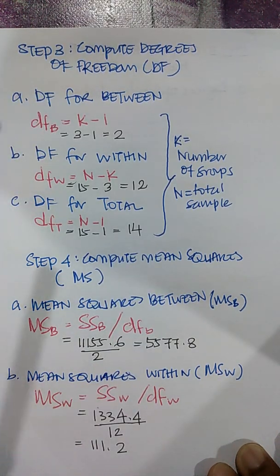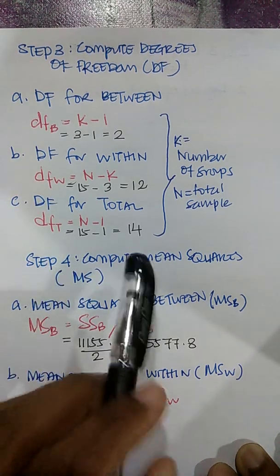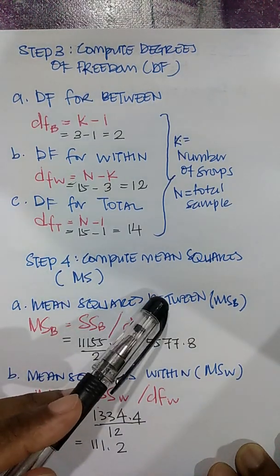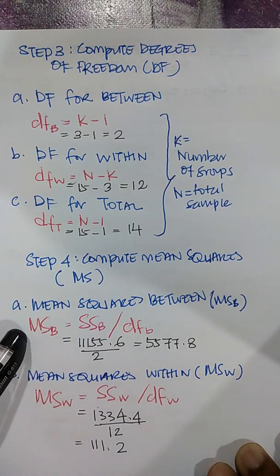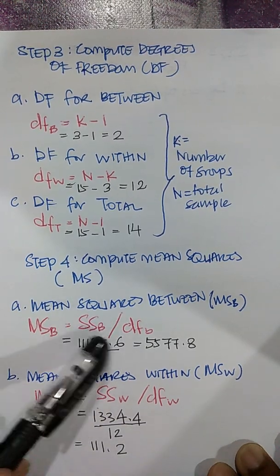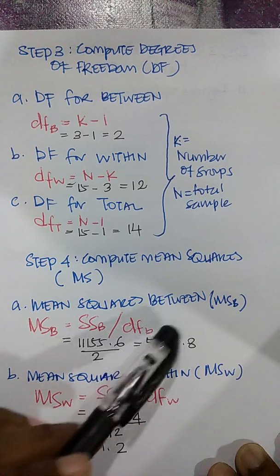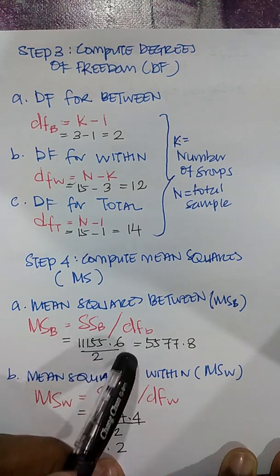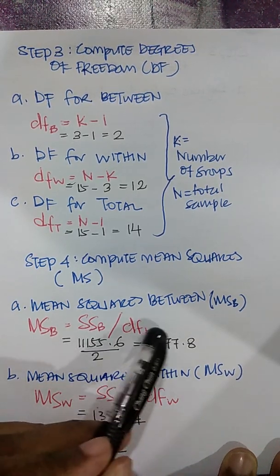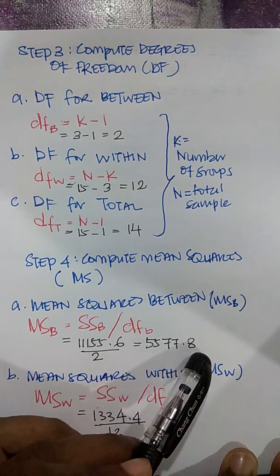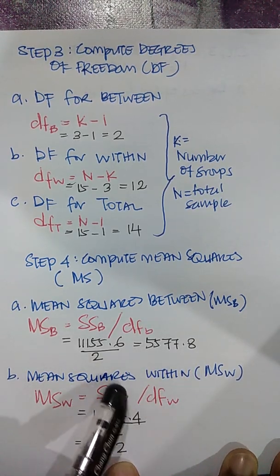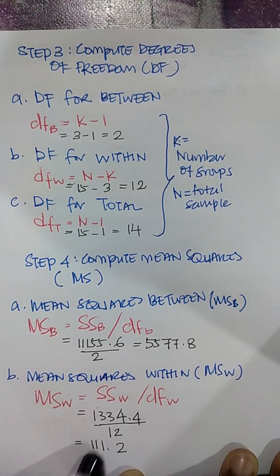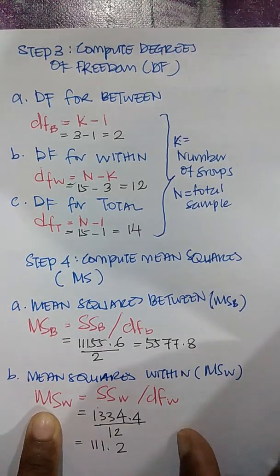Step 4 is computing mean squares. There are two: mean square between and mean square within. Mean square between equals sum of squares between divided by degrees of freedom between — 1155.6 divided by 2 equals 577.8. Mean square within equals sum of squares within divided by degrees of freedom within — 1334.4 divided by 12 equals 111.2.